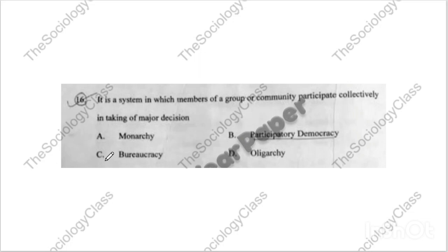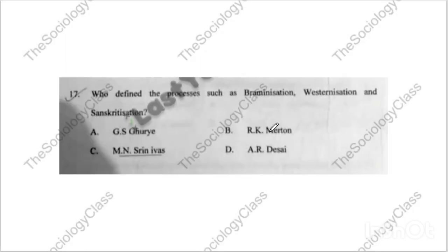Question number sixteen: 'It is a system in which members of a group or community participate collectively in taking major decisions.' The options are monarchy, participatory democracy, bureaucracy, or oligarchy. The answer is in the question itself — the correct answer is B, participatory democracy. Jamia has asked this type of question before, so please know the meanings of monarchy, bureaucracy, and oligarchy. I have shared notes on Telegram as well.